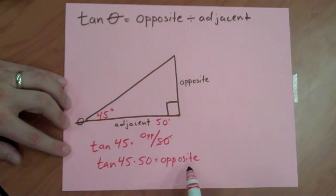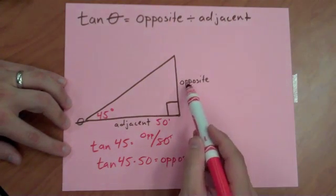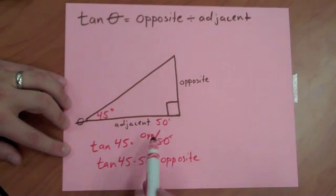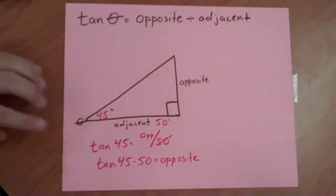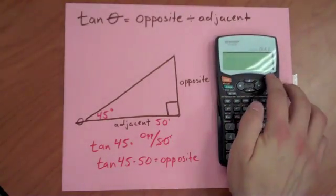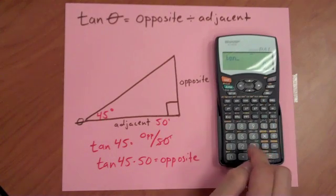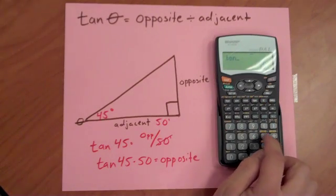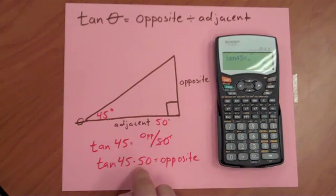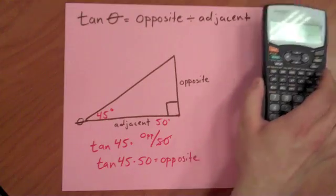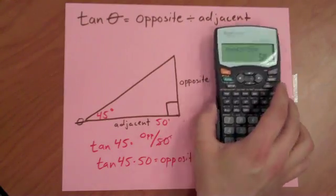Really simply here now I can find the length of this third side if I multiply the length of this side times the tangent of that angle. So let's go ahead and do that. Pull out my calculator here. I take tangent, which is the tan button, 45 times 50 equals, and I can see that the length of my opposite side is also going to be 50 feet.